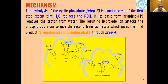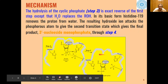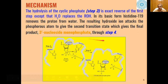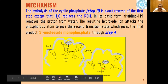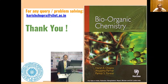This phosphorus-oxygen bond breaks and a proton is provided by histidine-12. We get the second part of the product — 3′-nucleoside monophosphate — formed in the fourth step of the reaction, which completes the hydrolysis of a molecule of RNA. Thank you very much.